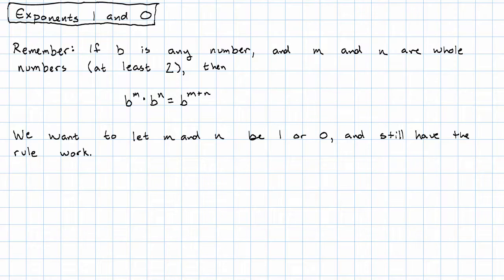b squared is b times b, two copies. It would make sense to say b to the one is just b, one copy. That makes sense and the rule still works. So for any number, b to the one is just b.